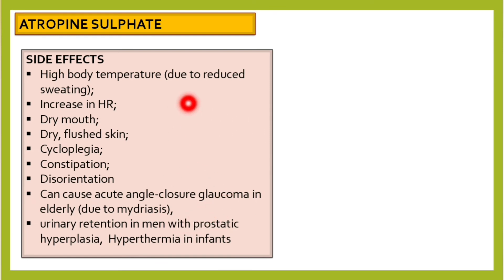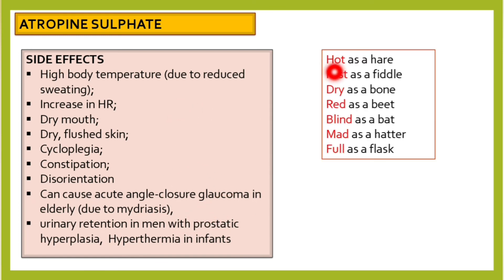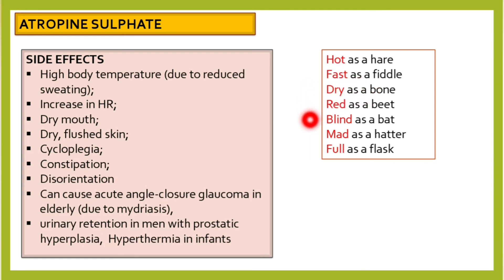There is a mnemonic to remember some of these side effects: Hot as a hare, fast as a fiddle, dry as a bone, red as a beet, blind as a bat, mad as a hatter, full as a flask.